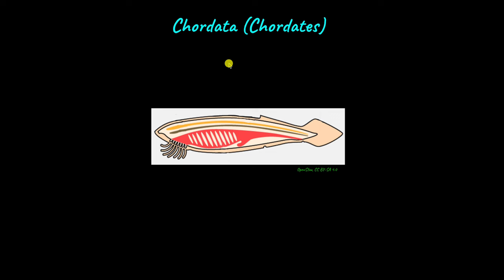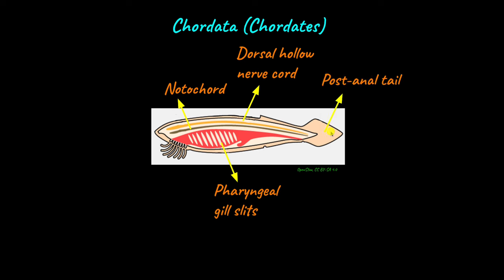Animals are classified as Chordates if they have four specific characters: the notochord, the dorsal hollow nerve cord, pharyngeal gill slits, and a post-anal tail. A notochord is a rod-like structure that usually involves supporting the animal's body. The nerve cord is made up of nervous tissue and is located above the notochord — hence the name dorsal nerve cord, because dorsal means above or on top. Gill slits are openings on the sides of the animals. The post-anal tail is found towards the end of the animal's body and is usually involved in movement.